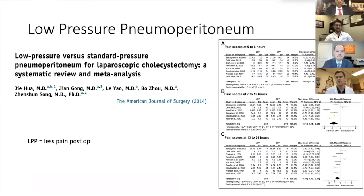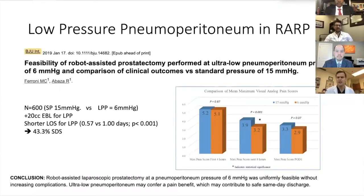This stems from work by the general surgery teams doing laparoscopic cholecystectomy with low pressures. Studies show pain at 6, 12, and 24 hours being significantly reduced. This idea of low-impact surgery makes sense for same-day surgeries. Dr. Abaza has done great work showing outpatient surgery using 6 millimeters of mercury. The comparison shows the main pain score postoperatively being of significance — I think that's a huge feature.